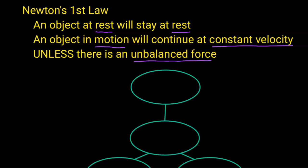An object in motion will continue at constant velocity unless there is an unbalanced force. By constant velocity, we're saying that it will be moving at constant speed in a straight line.